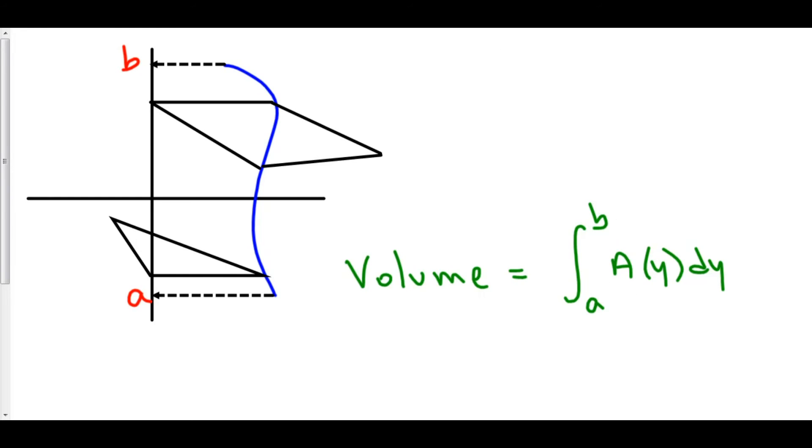So, for example, if this equation right here was y equals the square root of x, which obviously it isn't, but let's say it is. Then you would have to get x equals y squared and have your function in terms of y.